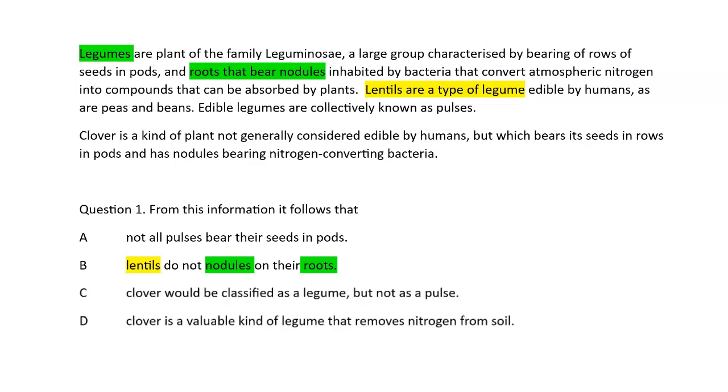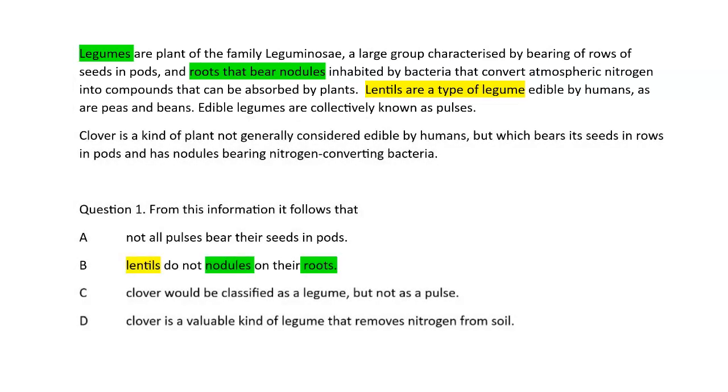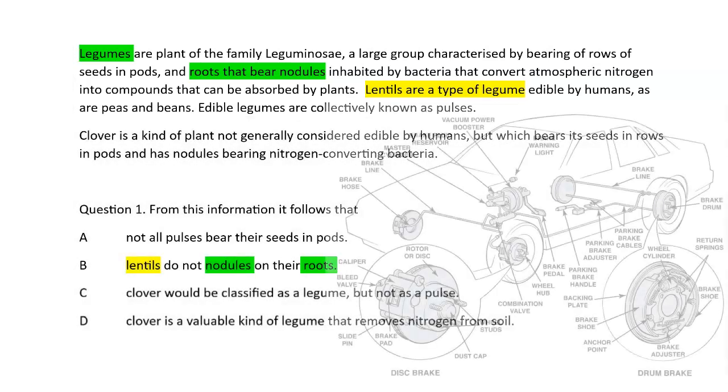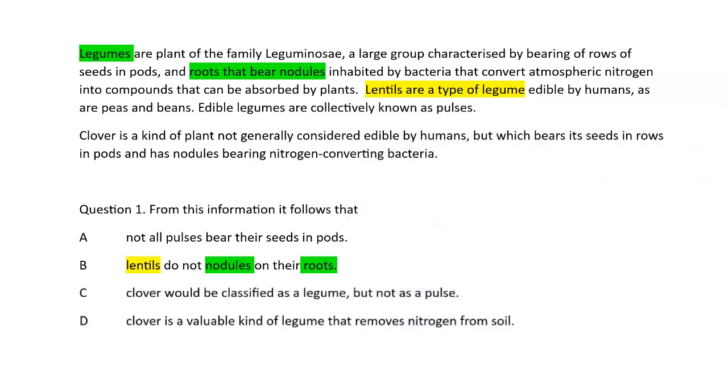Can you see that if we wanted to assess whether or not option B was correct, we would look for the words lentils, nodules, and roots. And then we would find specific sentences or even paragraphs where we'd find that information. Even when we find certain sentences, we need to be able to break those sentences down into the individual facts or premises. And not all of those things will be relevant to our particular question or even to our particular task at hand.